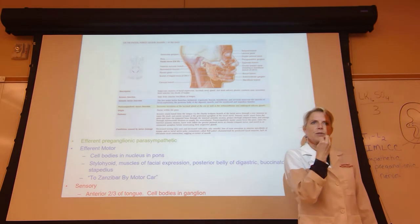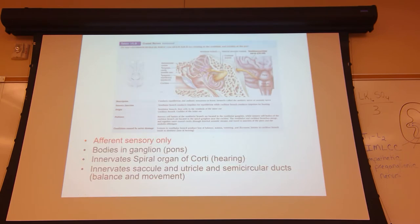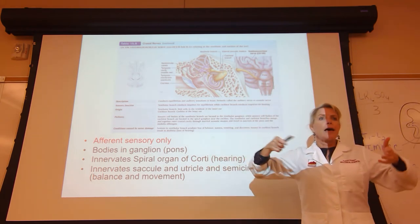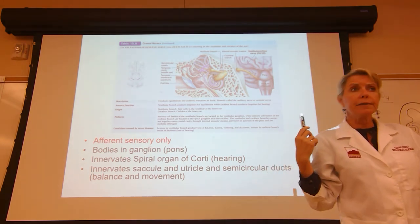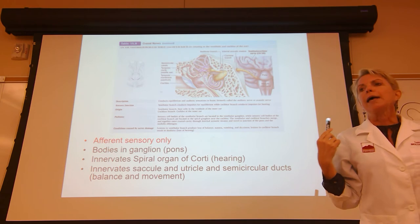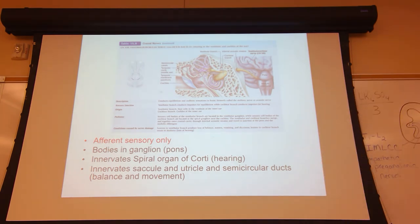Cranial nerve VII sensory component covers the anterior two-thirds of your tongue for taste. Cranial nerve VIII is the vestibulocochlear nerve — sensory only. It carries action potentials your temporal lobe interprets as sound, and it is also important for equilibrium. Vertigo and dizziness involve cranial nerve VIII.